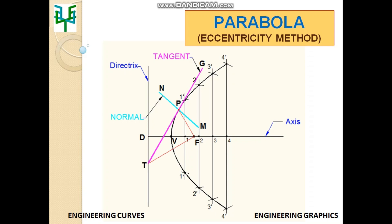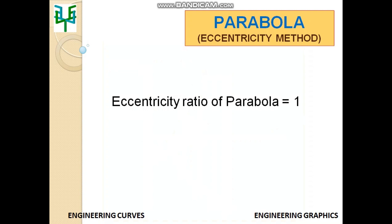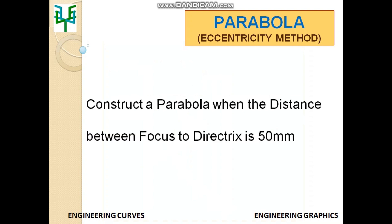In this video, we are going to discuss the construction of parabola by eccentricity method. Eccentricity ratio of a parabola is always 1. So the only data required for constructing a parabola is distance of focus from directrix. Construct a parabola when the distance between focus to directrix is 50mm.